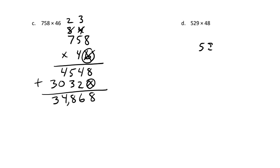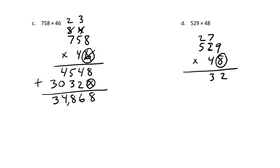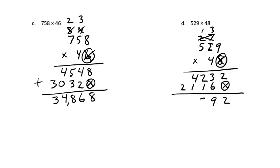If you haven't paused yet, you should — try 529 times 48 on your own, then come back. Starting with 8: 8 times 9 is 72, carry the 7; 2 times 8 is 16 plus 7 is 23, carry the 2; 5 times 8 is 40 plus 2 is 42. Put an X, cross these out. Now working with 4: 9 times 4 is 36, carry the 3; 2 times 4 is 8 plus 3 is 11, carry the 1; 5 times 4 is 20 plus 1 is 21. Answer: 25,392.